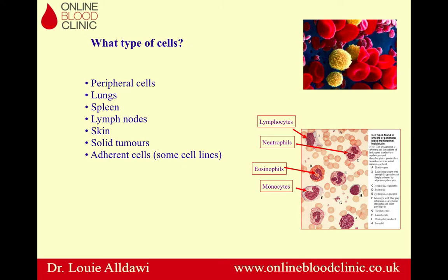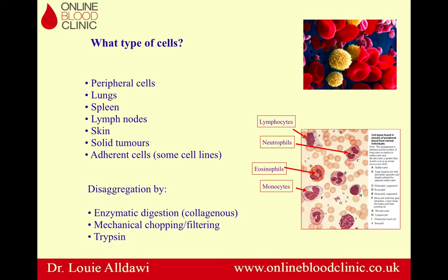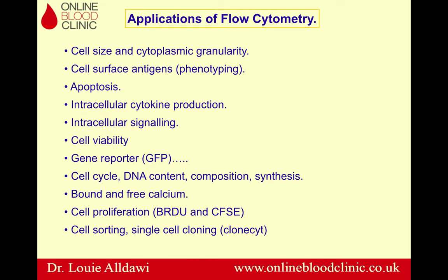What type of cells can you use for flow cytometry? You can use blood cells, lungs, spleen, lymph nodes, solid tissue, and solid tumors. If you want to use solid tissue, obviously you need to perform disaggregation by different means.